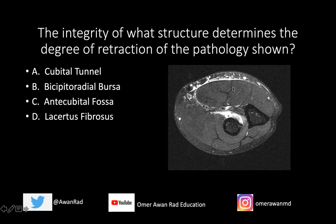So we have this axial T2 fat sat image through the elbow. This circular bone here in cross-section is the radius. This is the ulna. We obviously have subcutaneous edema anteriorly. This here is the radial tuberosity, and there should be a nice dark black tendon — the biceps tendon — that inserts onto the radial tuberosity. But instead, we lose the hypointense or dark signal of the tendon, and it's filled with T2 hyperintense signal, which is edema or hemorrhage. So we know that the tendon is torn.